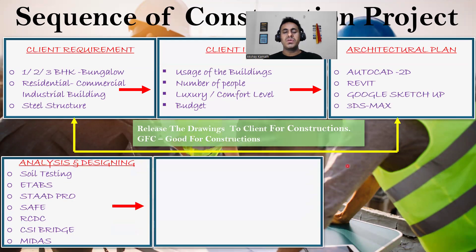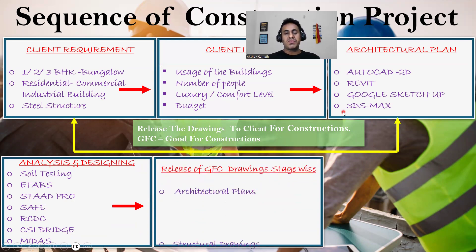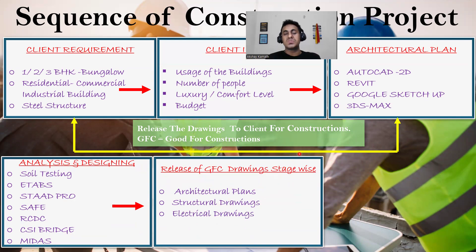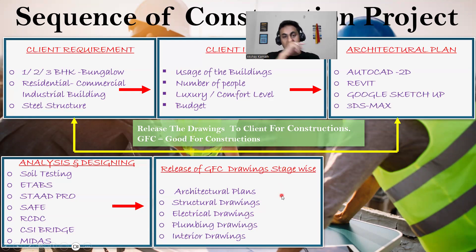We then release the GFC (Good for Construction) drawings. First is the architectural plan, then structural drawings covering footing, column, beam, slab, and staircase. You also need to produce electrical drawings and plumbing drawings — because for a building to be usable, you need proper electricity and plumbing. In a big firm, electrical engineers handle electrical drawings and plumbing engineers handle plumbing drawings.